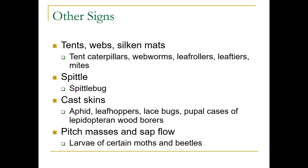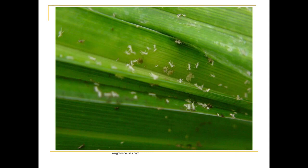Other signs you might see include tents, webs, and mats from tent caterpillars, webworms, leaf rollers, and leaf tiers. Spittle bug will be starting to show up — someone posted a picture of spittle bug in their samples. Cast skins are left behind from insects because, having exoskeletons, they must molt as they grow. You may also see pitch masses and sap flow from certain moths or beetles that are feeding on wood.